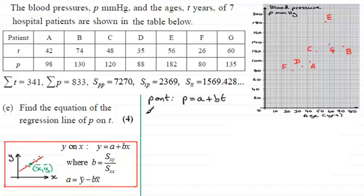Now we've got to calculate that value B. So B is going to be equal to, instead of SXY over SXX, it's now going to be STP divided by STT.